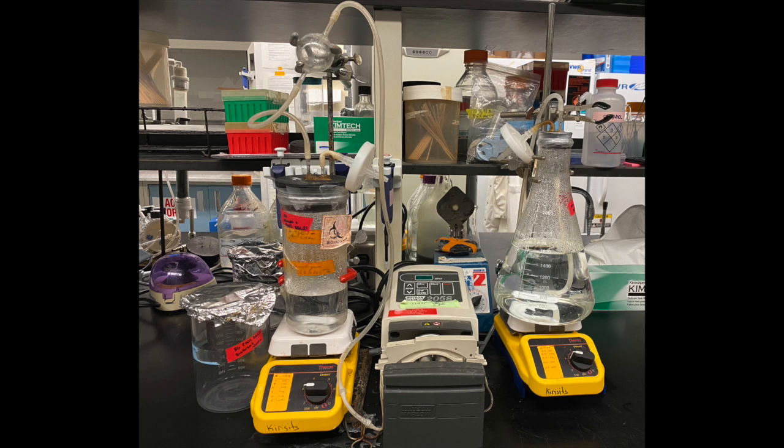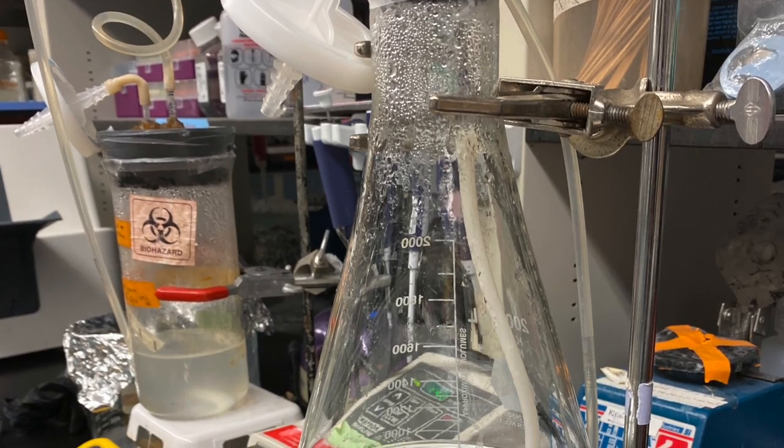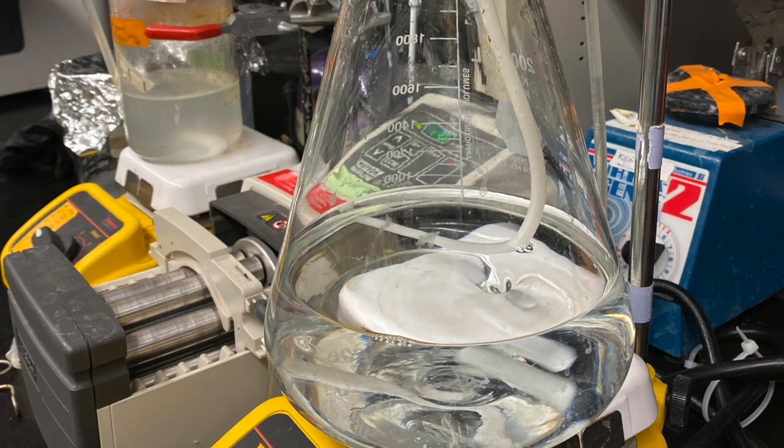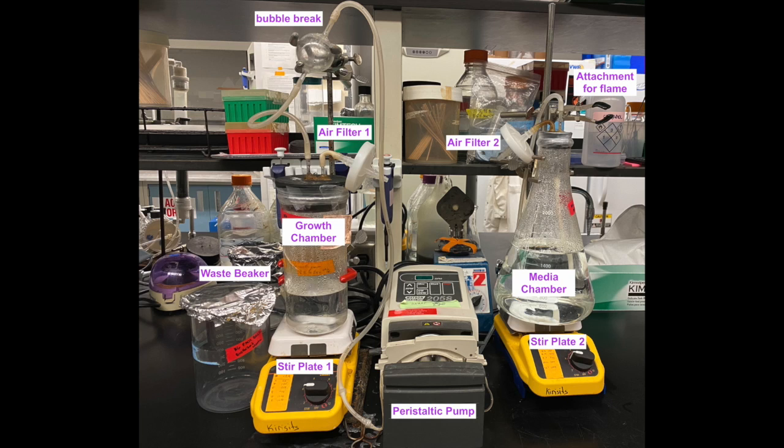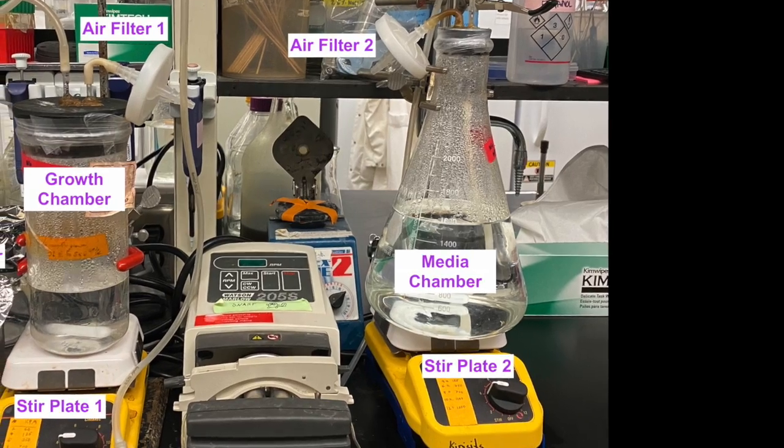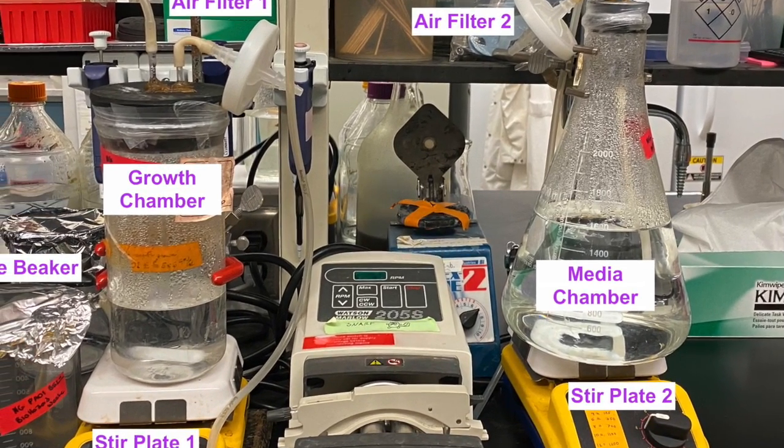Chemostats are biological CSTRs which are used to maintain a stable continuous culture volume of a target microorganism for research. Let's start by labeling the parts of the chemostat. Most importantly we have the growth chamber, and this is where our target organism lives.